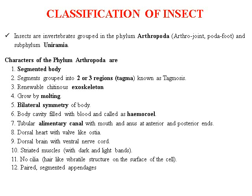In the classification of insects, insects are invertebrates grouped into the phylum Arthropoda. As we have seen in earlier lectures, Arthropoda means jointed appendages — 'arthro' means jointed and 'poda' means foot or legs. The subphylum is Uniramia.